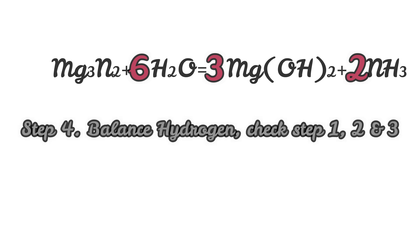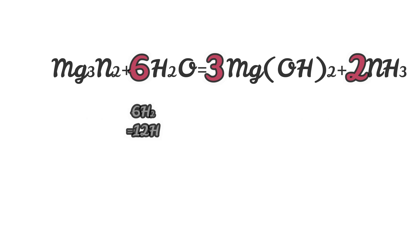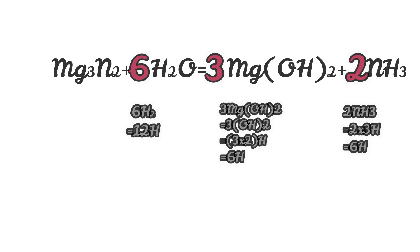Now move to last step. We see 12H in reactant. Products also have 6 plus 6, or 12 hydrogen atoms: 6 from 3Mg(OH)2 and 6 from 2NH3. So this step is already balanced. Check the previous steps; they must also be balanced.